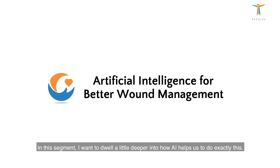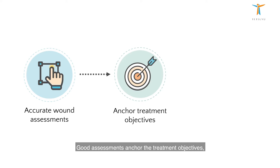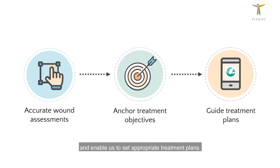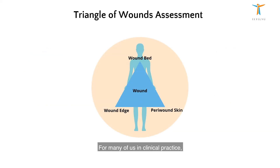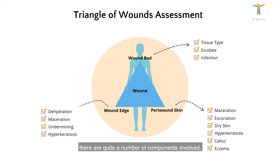In this segment, I want to delve a little bit deeper into how artificial intelligence helps us to do exactly this. The first step of any good wound management algorithm starts with an accurate assessment. Good assessments anchor the treatment objectives and enable us to set appropriate treatment plans. For many of us in clinical practice, the triangle of wounds assessment is a gold standard, and we can see there are quite a number of components involved.